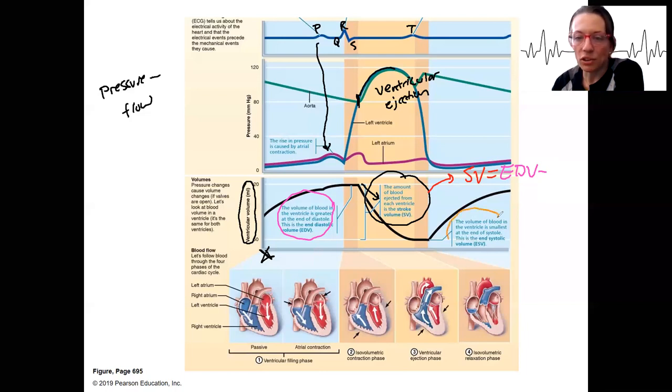What's left after contraction is called the end systolic volume after contraction. And that is a lot less, but it's not zero. So because it's not zero, the stroke volume is not the same as what we started with.